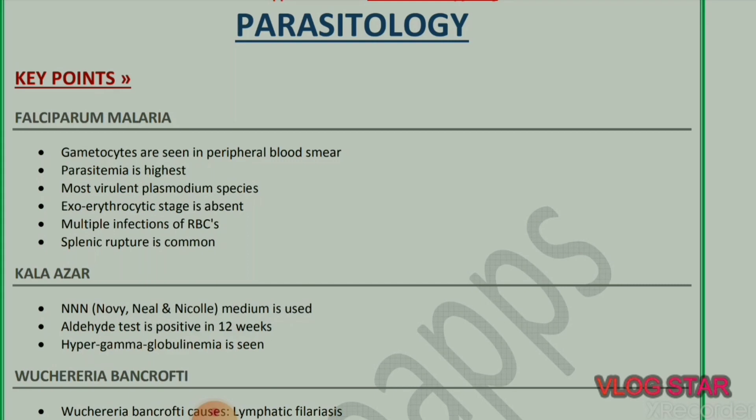Welcome back to my channel Miss Medicine. This is the quick review of parasitology, so let's get started with key points. Falciparum malaria: gametocytes are seen in peripheral blood smear, parasitemia is highest, it is the most virulent plasmodium species, and the exo-erythrocytic stage is absent.